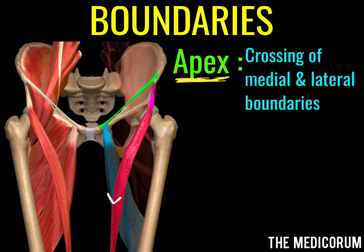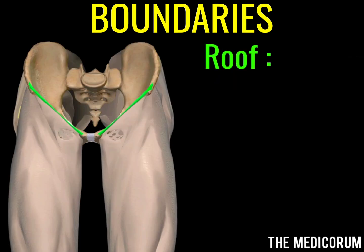We have seen two borders and the base. Coming on to the apex — the apex is formed at the place where there is a crossing of both the medial as well as the lateral boundaries.